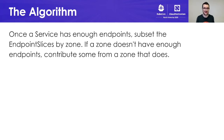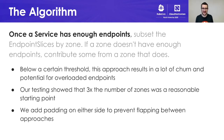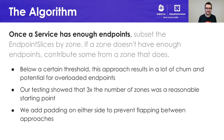Let's talk about the algorithm that we ended up deciding on — and of course this algorithm can still change and can still be improved. I've tried to simplify this algorithm into just a couple sentences. Once a service has enough endpoints, subset those endpoint slices by zone. If a zone doesn't have enough endpoints, contribute some from a zone that does. Below a certain threshold, this approach results in a lot of churn and potential for overloaded endpoints. Our testing showed that approximately three times the number of zones was a reasonable starting point — so if you had three zones, approximately nine endpoints was a good starting point.